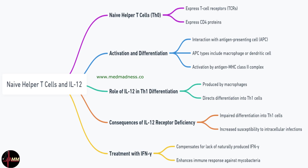If the antigen-presenting cell is a macrophage, it secretes IL-12. This cytokine is crucial because it directs the naive T cells to differentiate into Th1 cells. Th1 cells are vital in the immune defense against intracellular pathogens like mycobacteria.